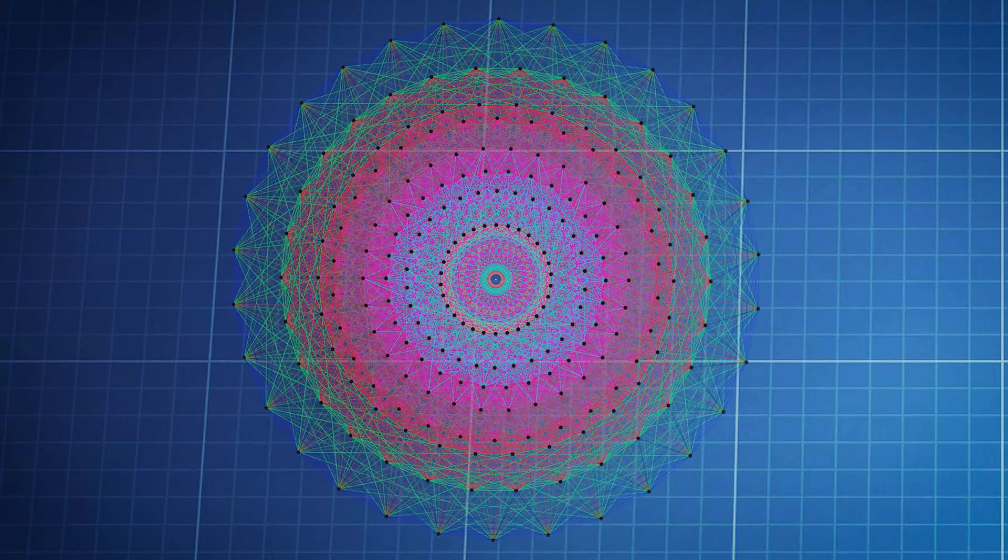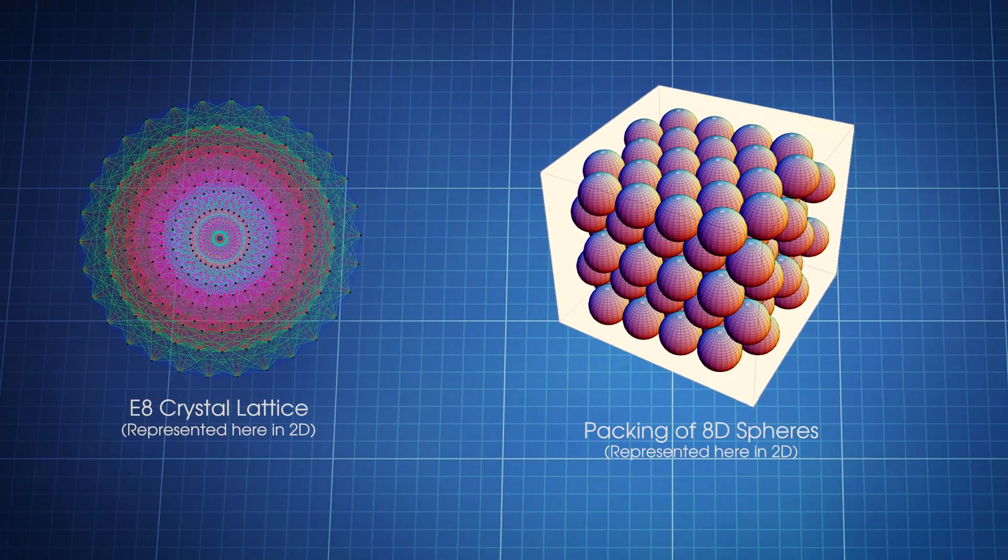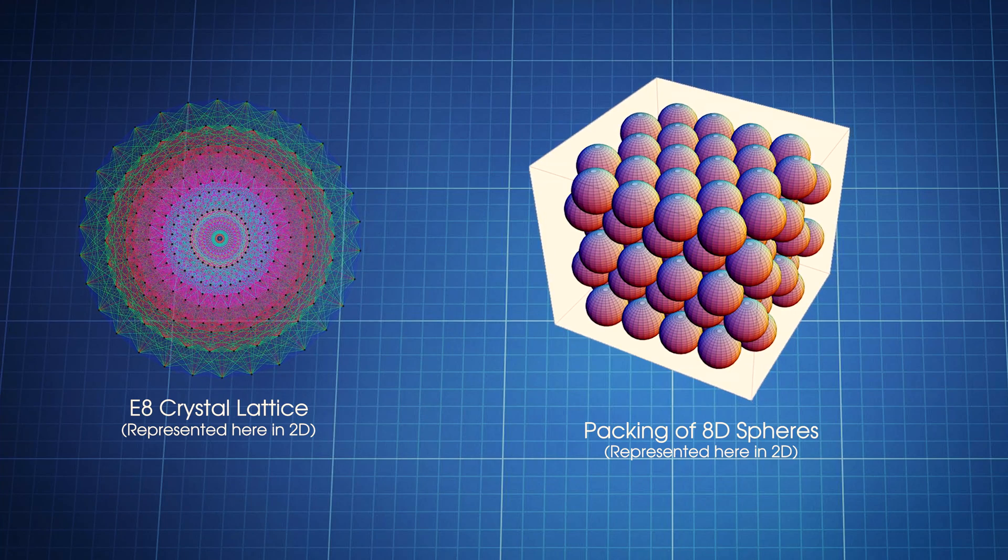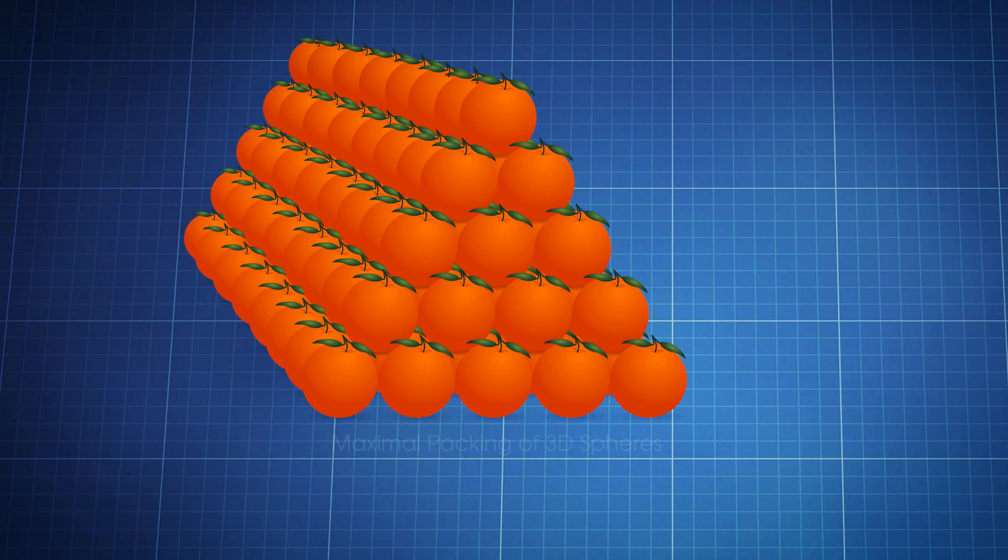The E8 crystal can be thought of as the maximum density packing of eight dimensional spheres, in the same way we would stack oranges in the supermarket—it's the maximum density that we can pack those spheres.